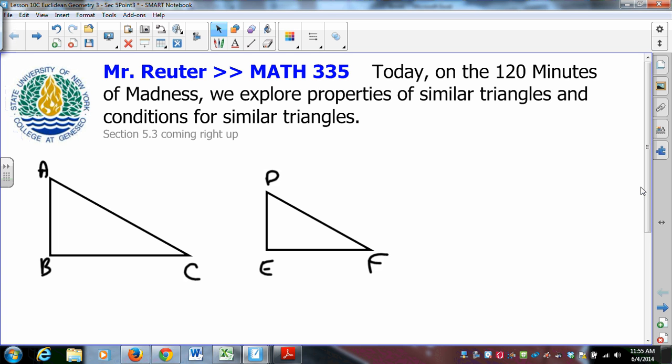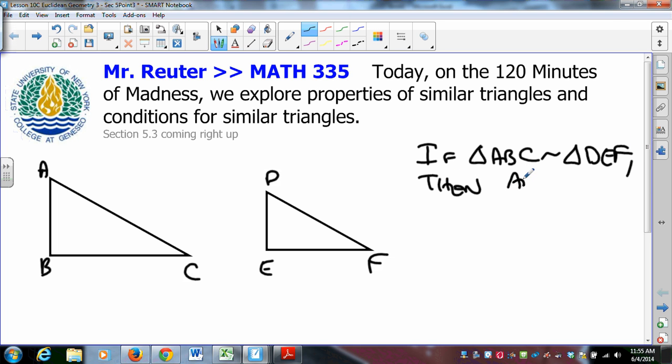That, in fact, happens to be a true statement. It is true to say if triangle ABC is similar to triangle DEF, then AB to AC is DE to DF. It is totally true to say that.